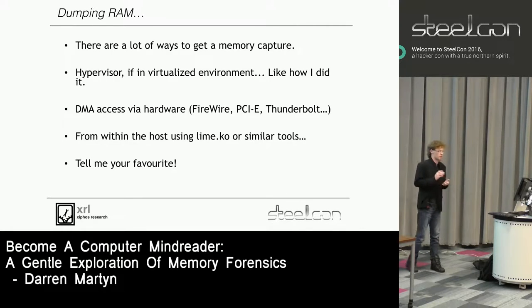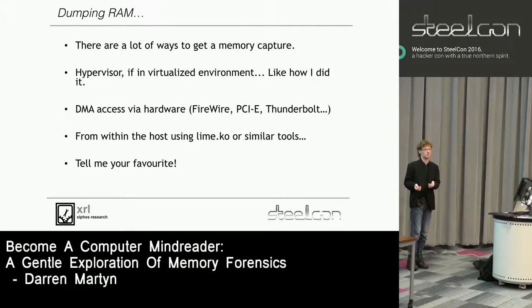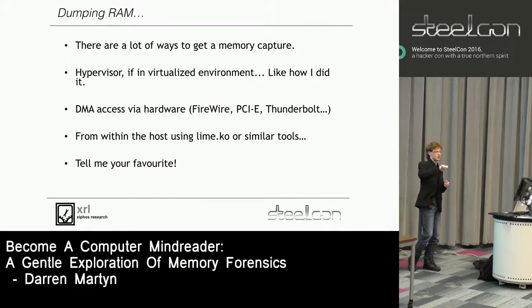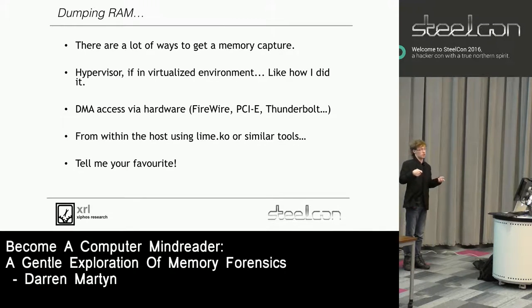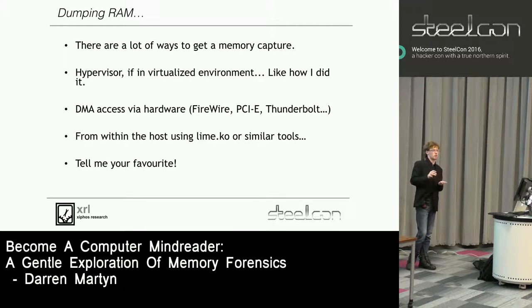There are actually a lot more ways to dump RAM. I used VirtualBox's hypervisor tools, but you've also got DMA via Firewire, PCI Express, Thunderbolt. Most people are probably familiar with the fact that Firewire has direct memory access. There's a limitation though - you can only get the first four gigabytes of RAM, for reasons I don't fully understand. Or you can do it from within the host using LiME or WinPMem, depending what system you're on.